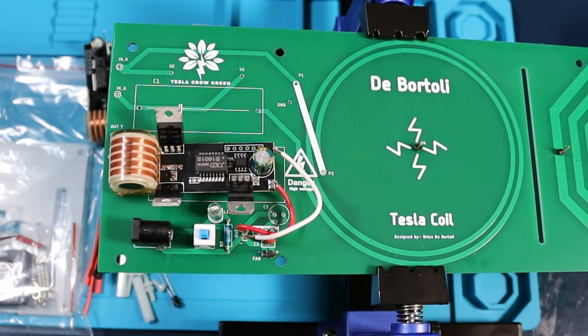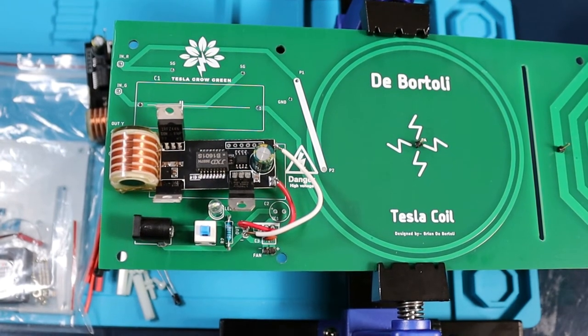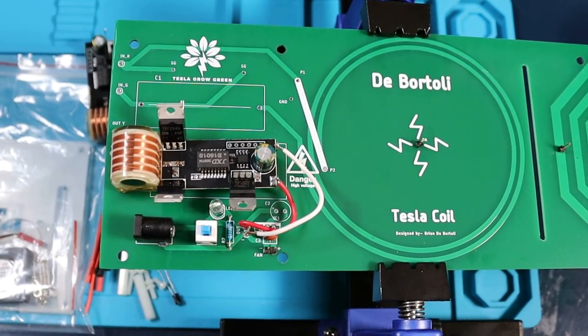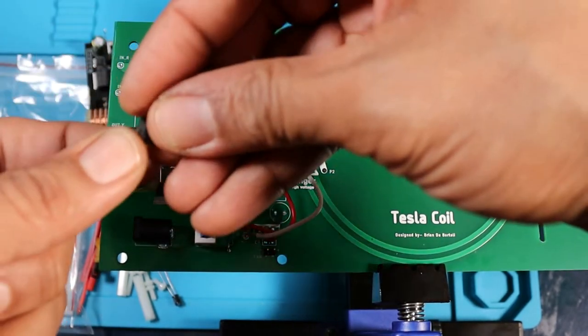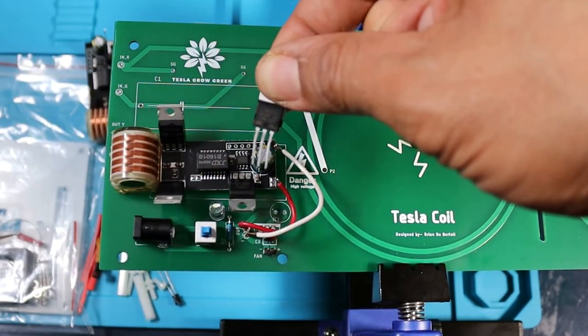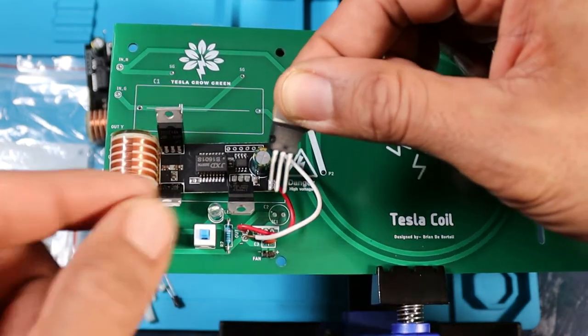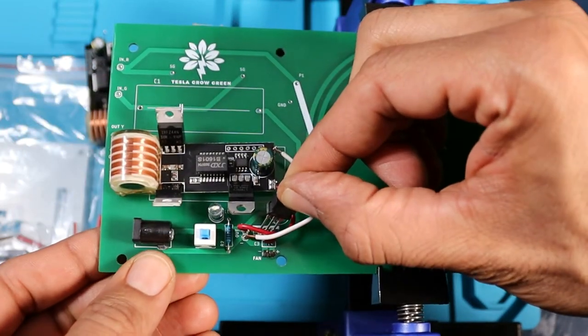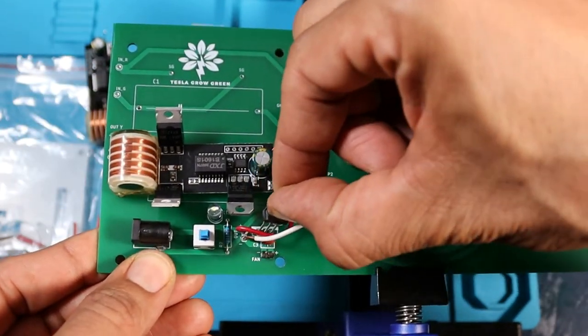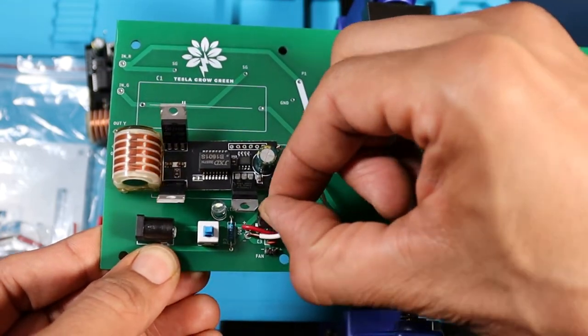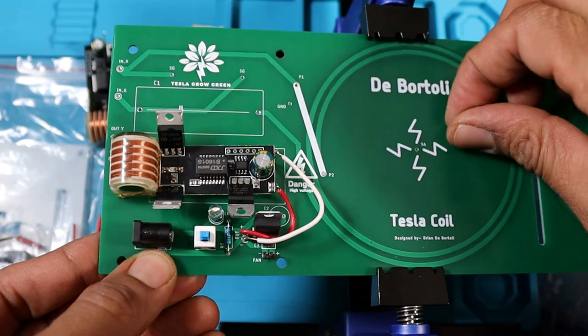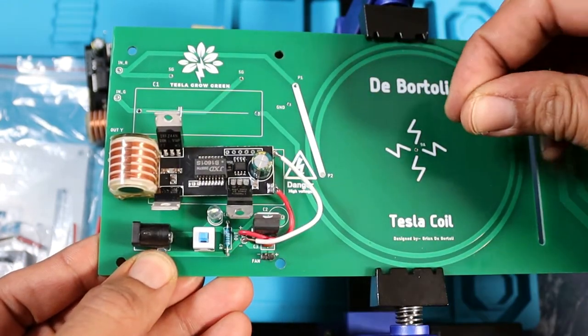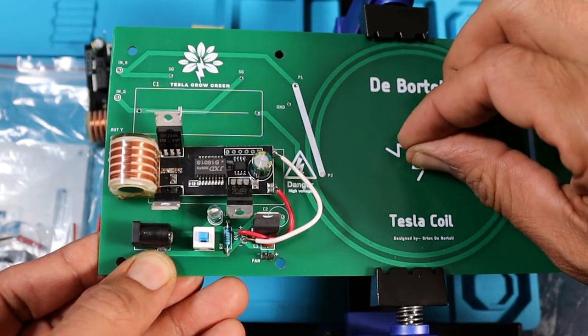Next we are going to want to put our rectifier L7805 onto the IC1 part of the board. This is our 5 volt rectifier. Believe it or not there is a lot of work that goes into this. It goes in right like that. And we would like to put the back side onto just like that in the instructions.